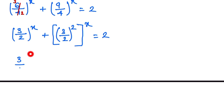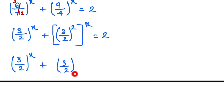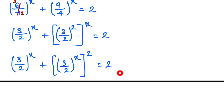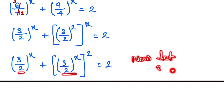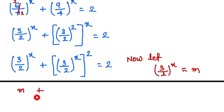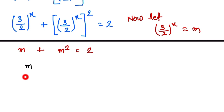Now we let m equal to 3 by 2 to the whole power x. Substituting, we get m plus m squared is equal to 2, which gives us m squared plus m minus 2 is equal to 0. We now have a quadratic equation.